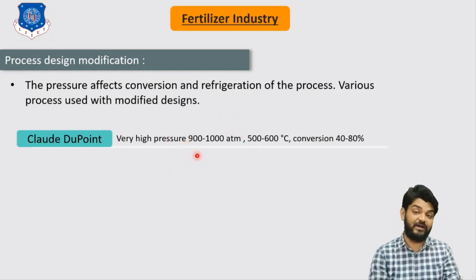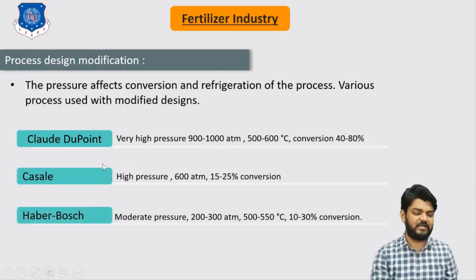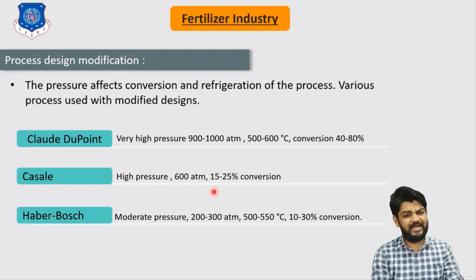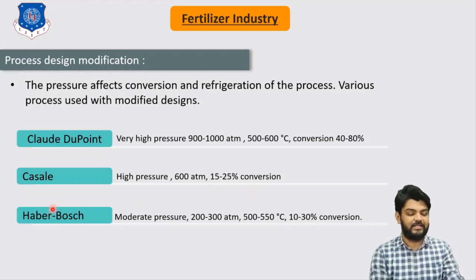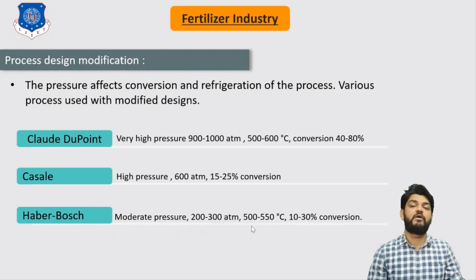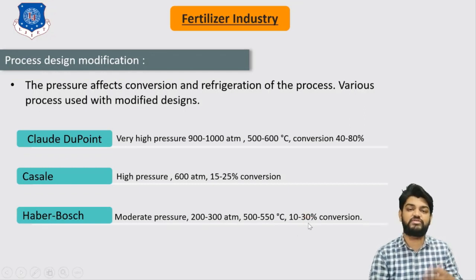By increasing pressure to 900 to 1000 atmospheres, conversion increases from 40 to 80%. The Casale method uses high pressure around 600 atmospheres, giving relatively low conversion of 15 to 25%. The Haber process operates at moderate pressure of 200 to 300 atmospheres and temperature of 500 to 550°C, giving conversion of around 10 to 30%.